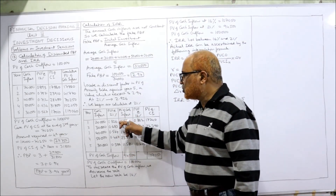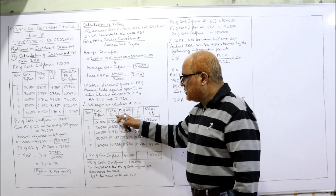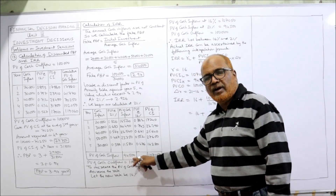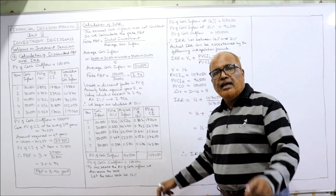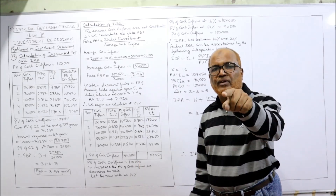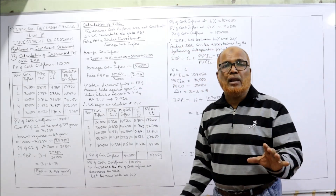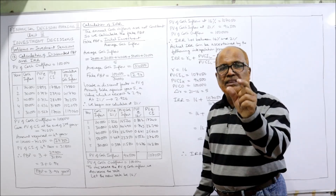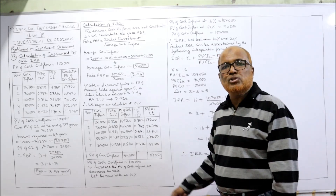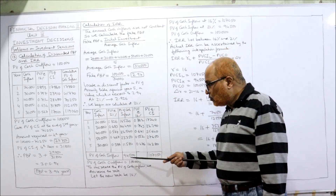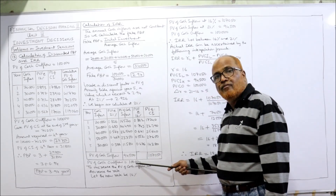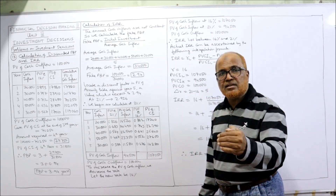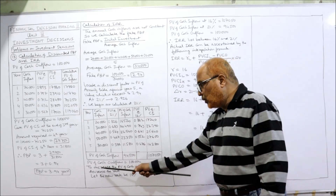At 21%, referring the table, PV factors are: 0.826, 0.683, 0.564, 0.467, 0.386. Multiplying cash inflows by PV factors gives a total PV of cash inflow of 94,500. The PV of cash outflow is 1,00,000. IRR is the rate where PV of inflow equals PV of outflow. Since 94,500 is less than 1,00,000, we need to increase the PV of inflows by decreasing the rate.